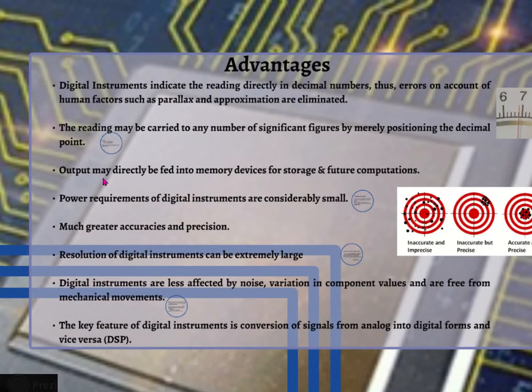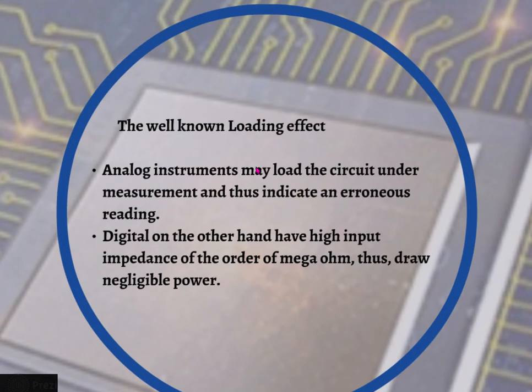The output may be directly fed into memory devices for storage and future computations, while analog instruments have extremely limited storage capabilities — one such example being tape recorders. The power requirement of digital instruments is considerably small, which avoids the well-known loading effect where analog instruments may load the circuit under measurement and indicate erroneous readings. Digital instruments have high input impedance on the order of megaohms, thus they draw negligible power.